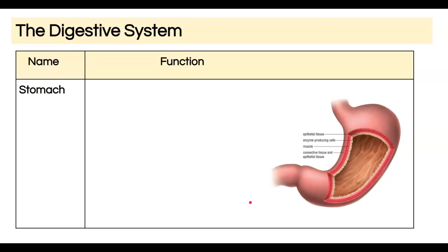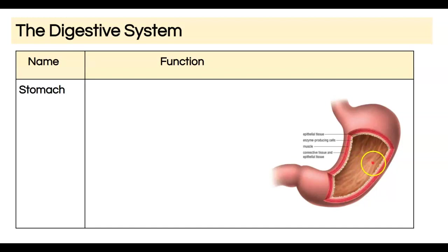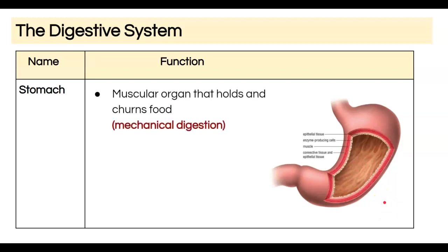Food arrives from the esophagus into the stomach, which is a J-shaped organ. It has epithelial tissue on the surface, cells that produce enzymes to help with digestion, and a thick muscle layer that helps with churning. The stomach can expand — you can see the ridges — to accommodate larger amounts of food while it's being churned and stored. This churning is mechanical digestion.